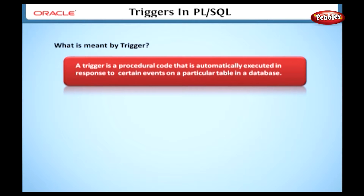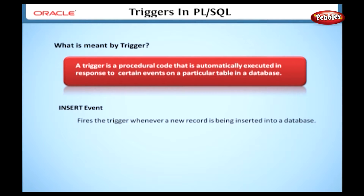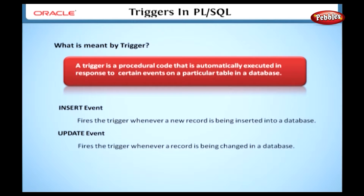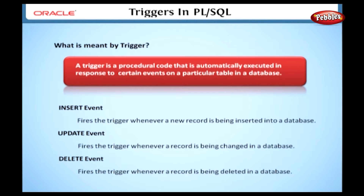There are three triggering events that cause triggers to fire. The Insert event fires the trigger whenever a new record is being inserted into the database. The Update event fires the trigger whenever a record is being changed. And the Delete event fires the trigger when a record is being deleted.